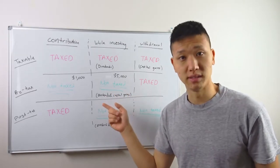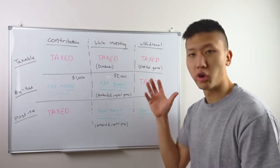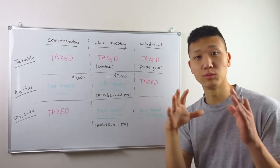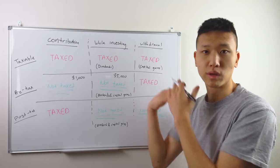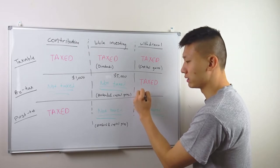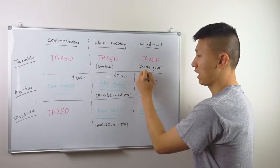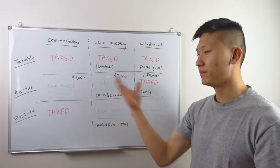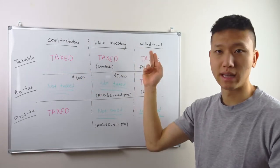That $1,000 growing to $5,000 — the growth is not taxed at any point, not by dividends or capital gains. Now let's say we're in retirement and we want to take out that $5,000. We tax the whole amount at the income tax rate — let's say 20%. So 20% of $5,000 means you come out with $4,000. You're only getting taxed once, as opposed to taxable accounts where you're taxed at every point.